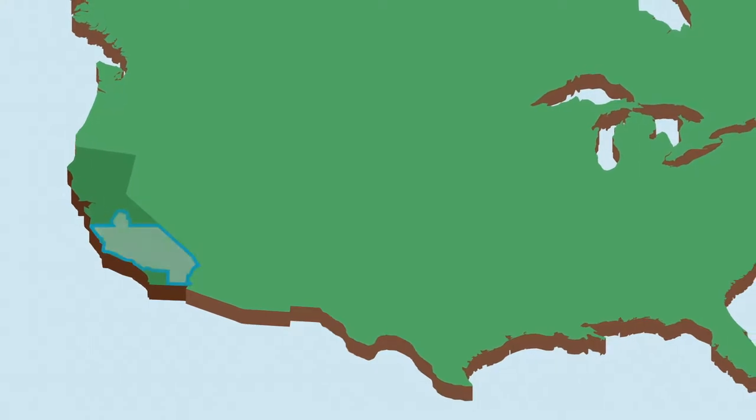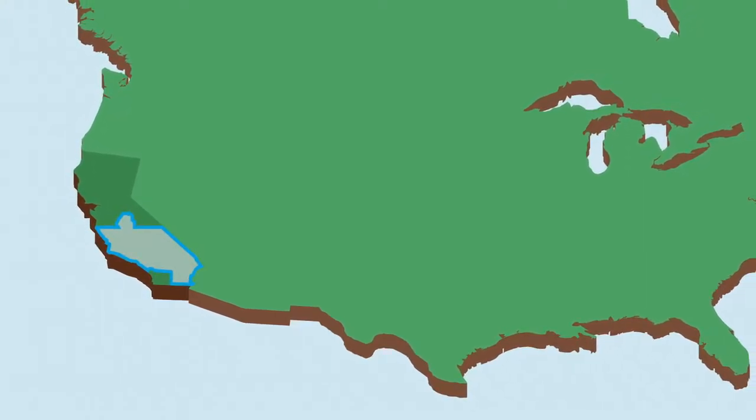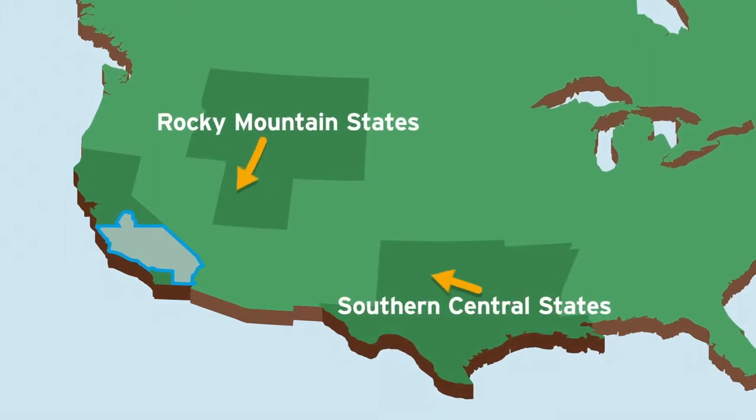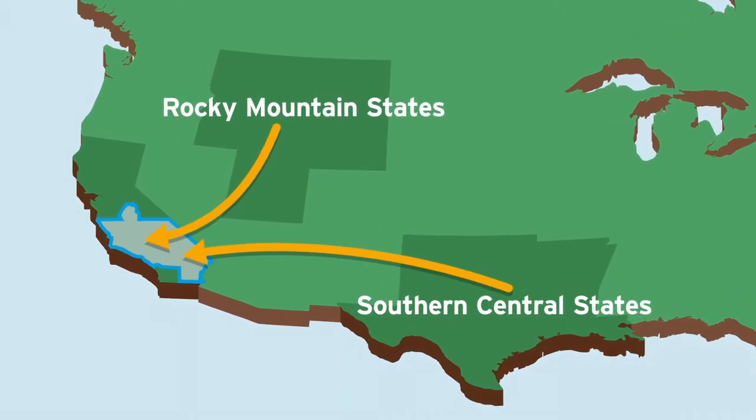Much of the natural gas used in Southern California actually comes from far away sources, such as the Rocky Mountains and Southern Central states, moving relatively slowly through the transmission pipelines.